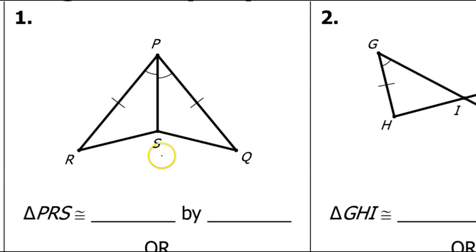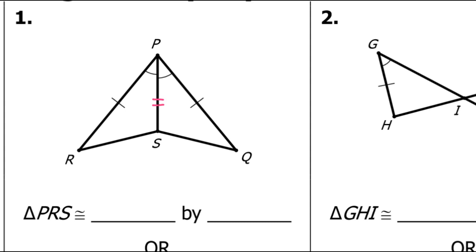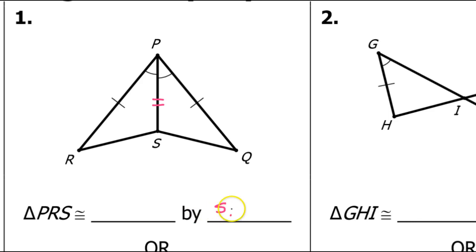So is there enough information here to determine that these two triangles are congruent? Well, in addition to what's already marked, we have a shared side PS. This side will be congruent for both triangles by the reflexive property. So let's go ahead and mark that. Now I see that we have a side, an angle, and a side — two sides and the angle in the middle. So that is in fact side-angle-side congruence.